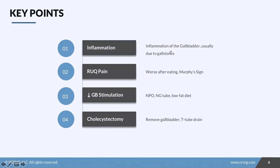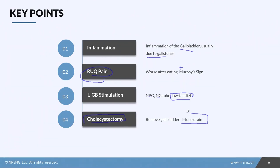Cholecystitis is inflammation of the gallbladder that makes it difficult for the patient to digest food appropriately, usually due to gallstones. Patients experience severe right upper quadrant pain worse after a meal, and we'll see a positive Murphy's sign. We decrease stimulation by keeping the patient NPO, inserting an NG tube, or having them eat a low fat diet. The best treatment is cholecystectomy, after which a T-tube drain is inserted to keep the ducts patent while the patient heals — monitor the output and report anything concerning.